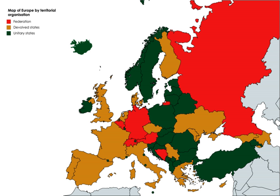In Europe, federalism is sometimes used to describe those who favor a common federal government, with distributed power at regional, national and supranational levels. Most European federalists want this development to continue within the European Union. European federalism originated in postwar Europe — one of the more important initiatives was Winston Churchill's speech in Zurich in 1946. In the United States, federalism originally referred to belief in a stronger central government. When the U.S. Constitution was being drafted, the Federalist Party supported a stronger central government, while anti-federalists wanted a weaker central government.